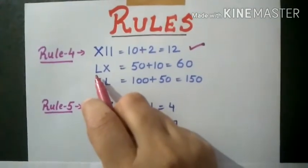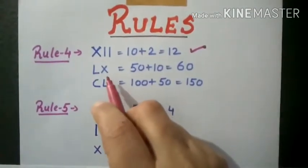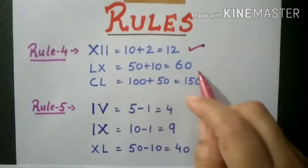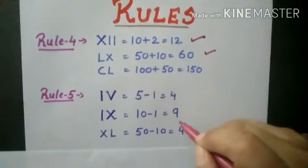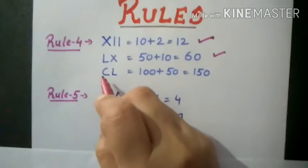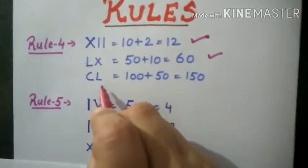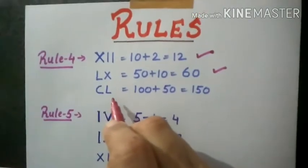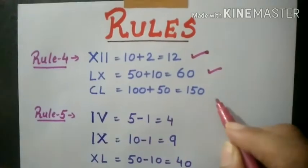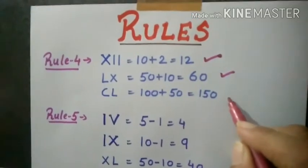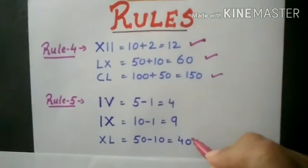Here L is 50 and X is 10. This is also written on the right side and it will be added and we get 60. In another example, C means 100 and L means 50. L is written on the right side of C means 100 plus 50. This is 150.